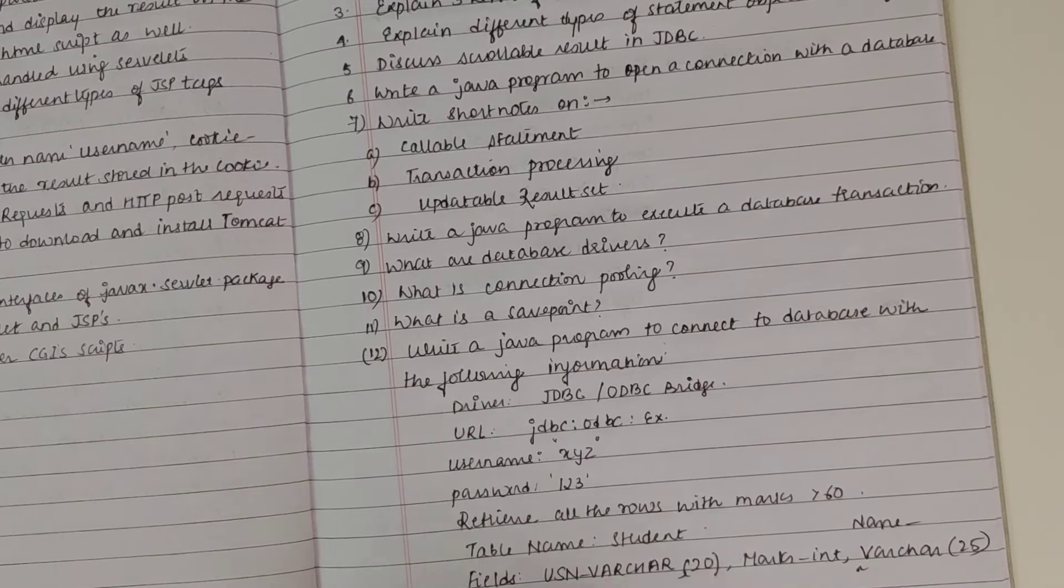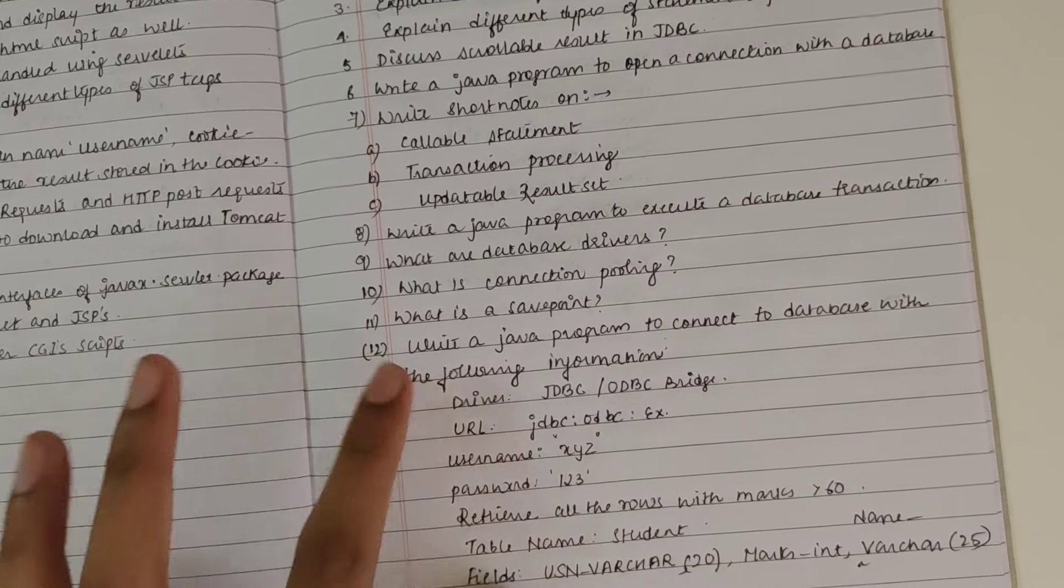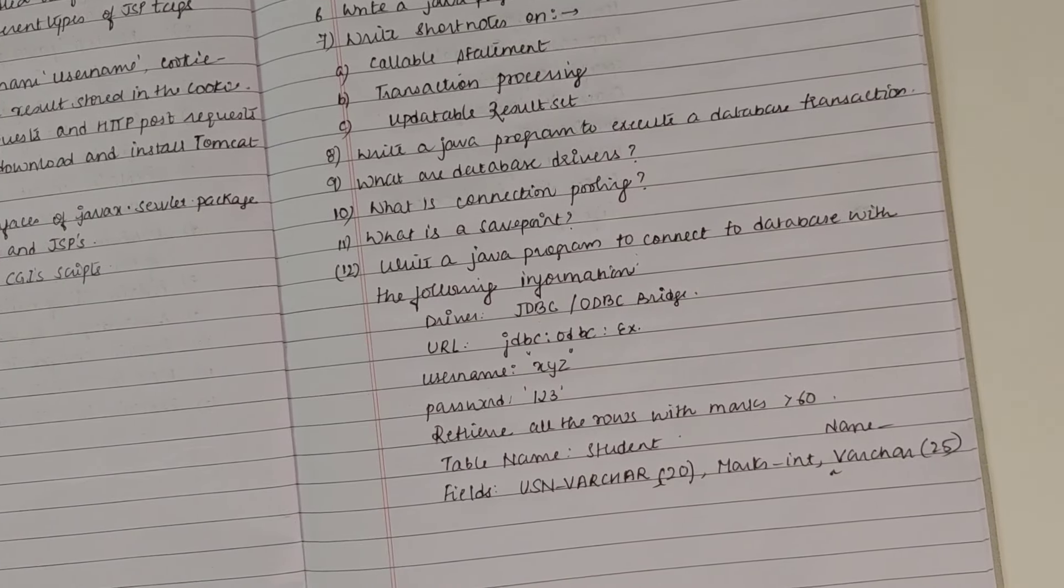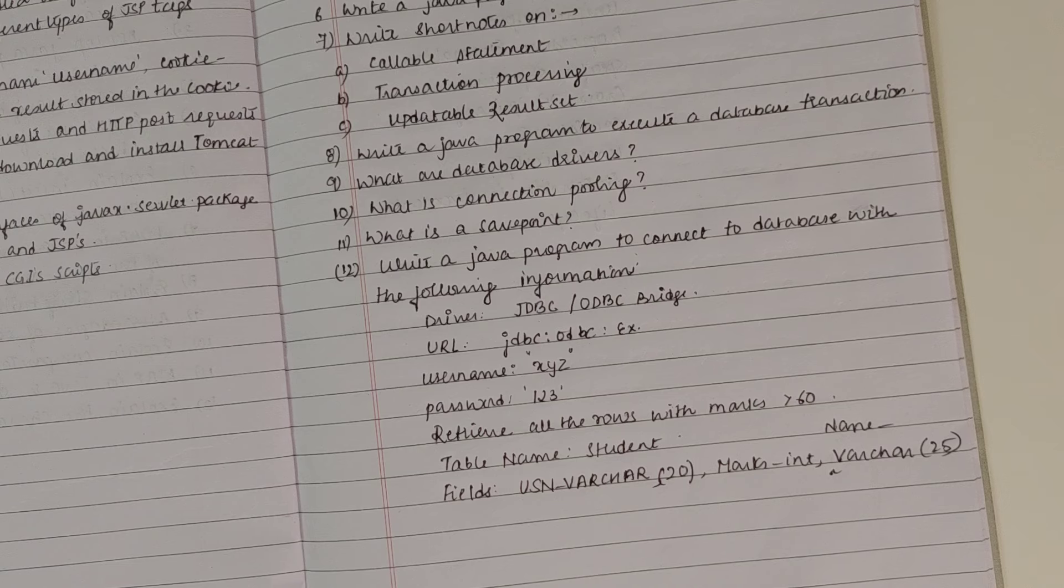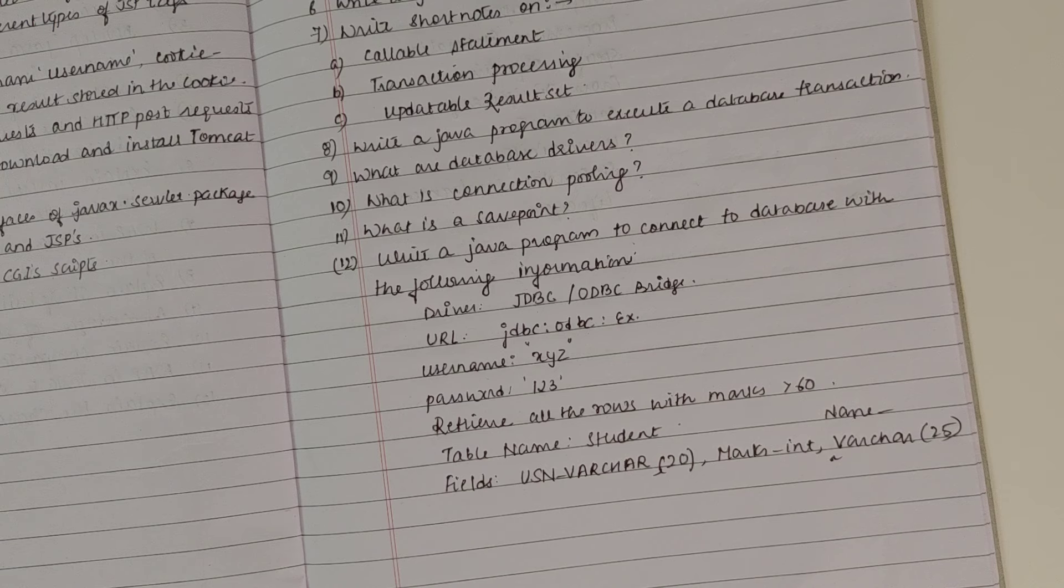Write a Java program to execute database transaction. What are database drivers? What is connection pooling? What is a save point? Build a Java program to connect to the database. Here they have already mentioned what will be your driver name, the URL, password and username you are passing, and what query operation you have to do.